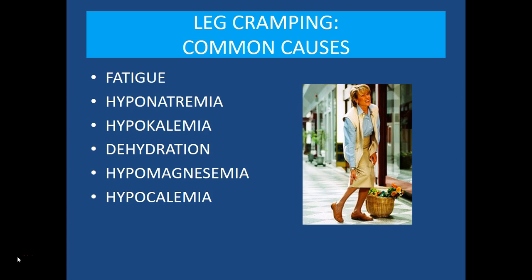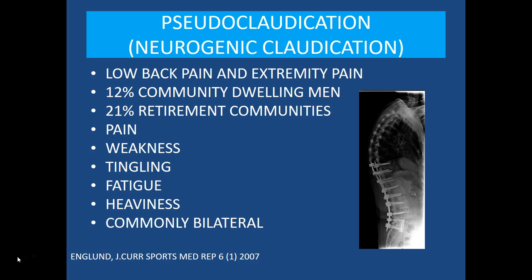As far as normal leg cramping goes, which may occur during evening hours or with walking, the most common causes are generally related to fatigue. We want to look and see whether the patient is taking a diuretic or medication that might influence electrolyte abnormalities. Generally we screen patients for hyponatremia, hypokalemia, low magnesium, hypocalcemia, or dehydration — which is a very common cause of cramping. Oftentimes simply encouraging greater hydration is sufficient to relieve some cramping. Venous disease can also cause cramping.